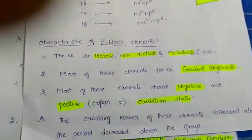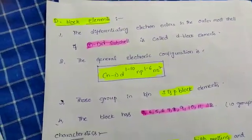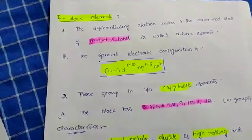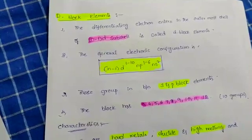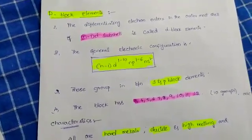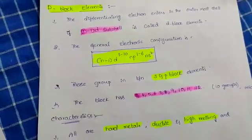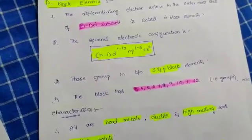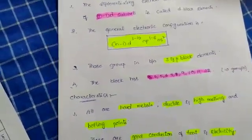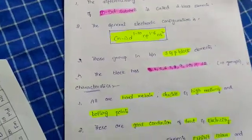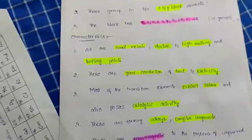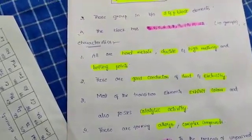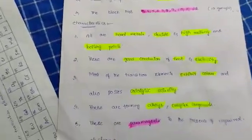Next, we know about D-block elements. The differentiating electron enters into the outermost (n-1) D-subshell — these are called D-block elements. The general electronic configuration is (n-1)D1-10 NS1-2. This block is in between S and P block elements and includes groups 3 to 12. Characteristics: all are hard metals, ductile, with high melting and boiling points, and are good conductors of heat and electricity.